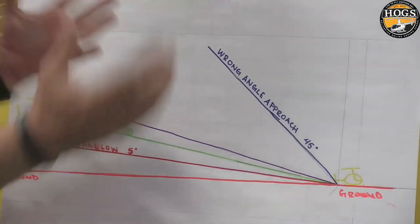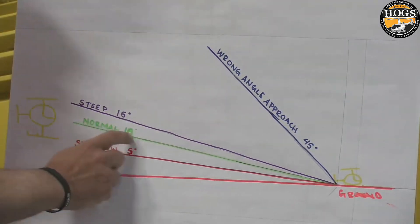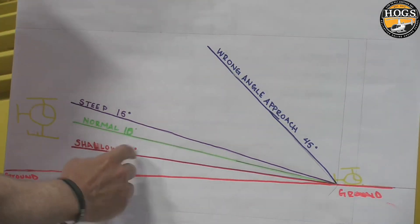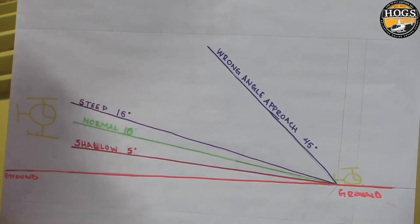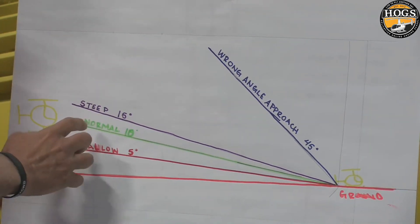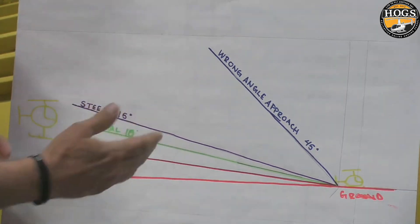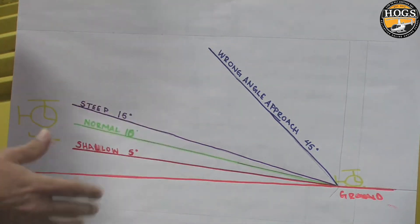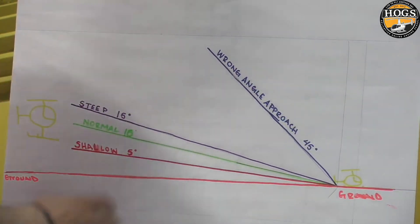So if you're struggling with approaches, you need to nail the normal first. I'm going to repeat this over and over: shallow is 5, normal is 10, and steep is 15. If you nail the normal first, then you know you can judge later how to do a shallow and how to do a steep. We've got another diagram to show you in the cockpit, and we're going to talk about it a little bit more down here on the bottom of the page.